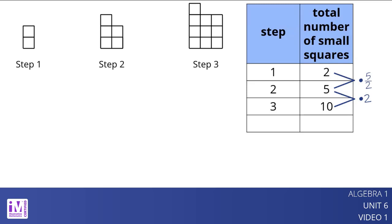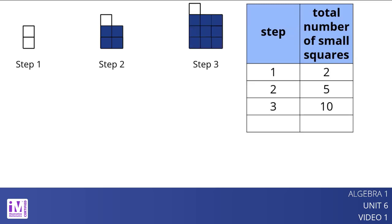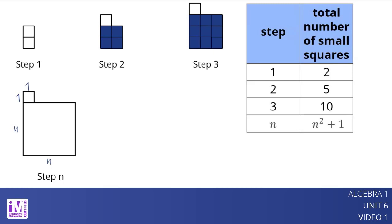From the diagram, we can see that in step 2, there is a 2 by 2 square plus one small square added on top. Likewise, in step 3, there is a 3 by 3 square with one small square added. We can reason that the nth step is an n by n arrangement of small squares with an additional small square on top, giving the expression n squared plus 1 for the number of small squares.